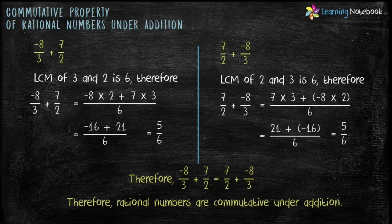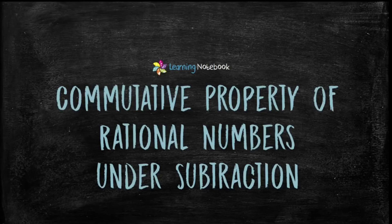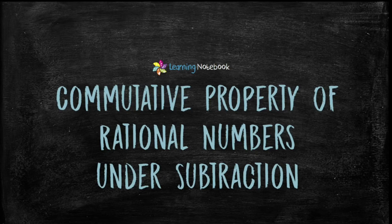In both cases the sum remains the same. Therefore, rational numbers are commutative under addition. Now let's understand commutative property of rational numbers under subtraction.